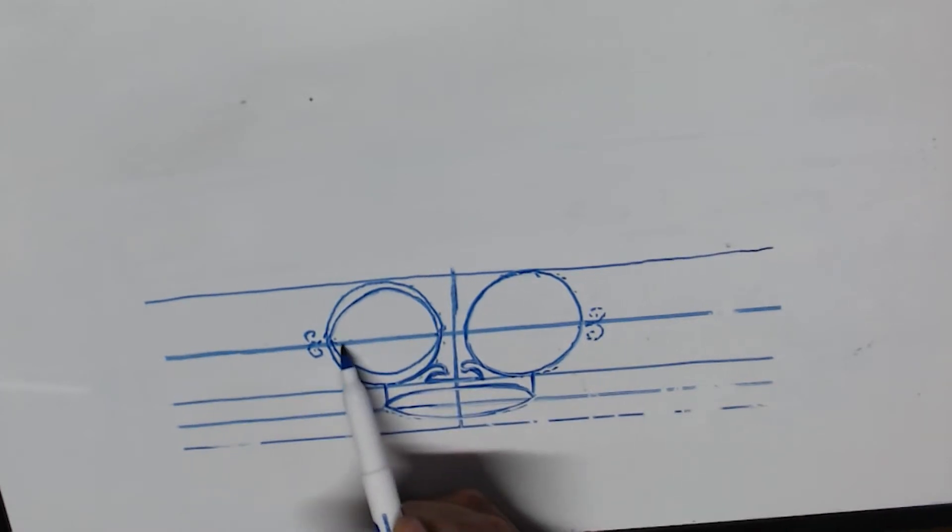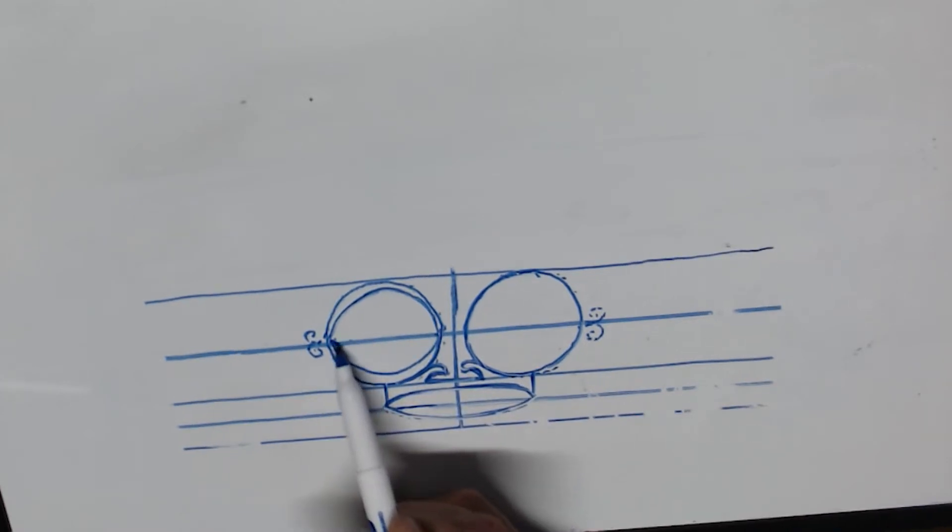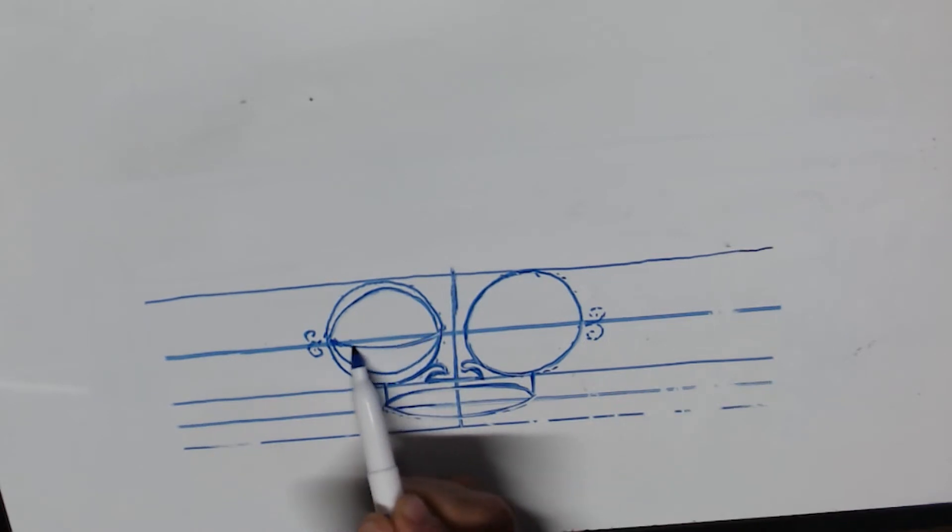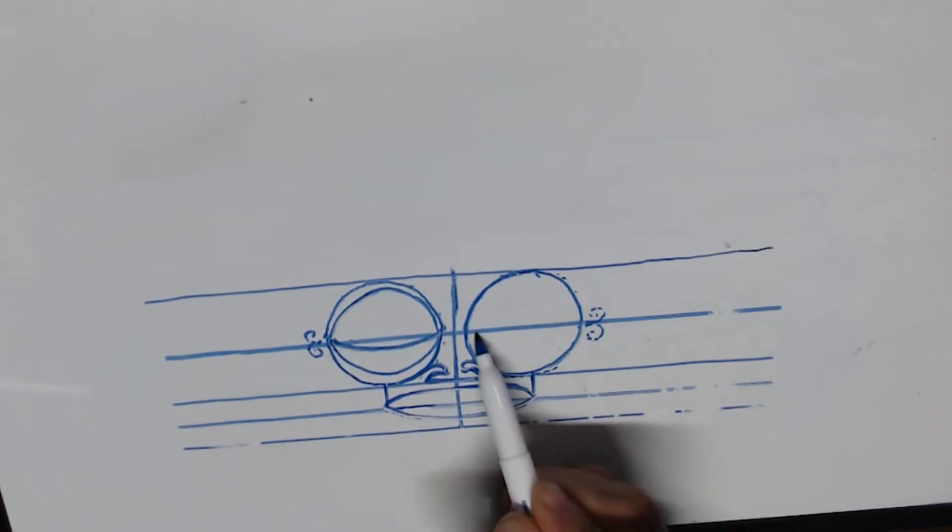And then the eye of the tiki is always, the tiki is always in a peaceful position with his eyes, like almost closed. So the eyes are pretty much like that all the time.